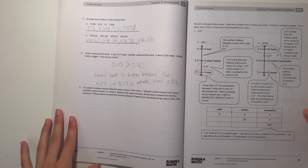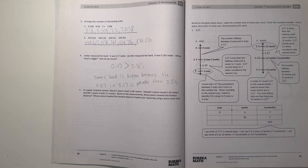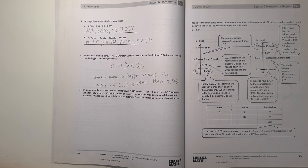Number five: in a paper airplane contest, Marcel's plane travels 3.345 meters, Solador's plane travels 3.35 meters, and Jennifer's plane travels 3.3 meters. Based on the measurements, whose plane traveled the farthest distance and whose traveled the shortest? We'll explain with a place value chart.